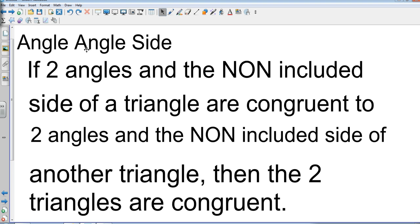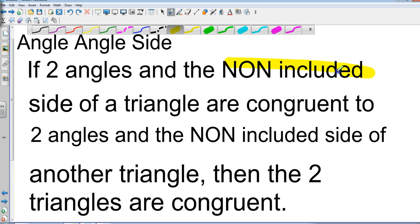Here's the next definition. Angle Angle Side says if two angles and the non-included side of a triangle are congruent to two angles and the non-included side of another triangle, then the two triangles are congruent.